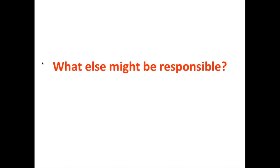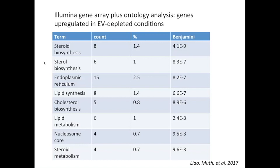What we did see, published last year, was that several genes related to steroid biosynthesis and other lipid biosynthesis were upregulated in the depleted conditions. We're following up on this finding to understand how cells can recognize the presence of EVs around them. We think this process is something akin to contact inhibition or quorum sensing — when the cell senses there's not a lot of membrane around it, whether on an EV or not, it begins to produce more sterols and more components of the membranes that EVs and HIV like to bud through.